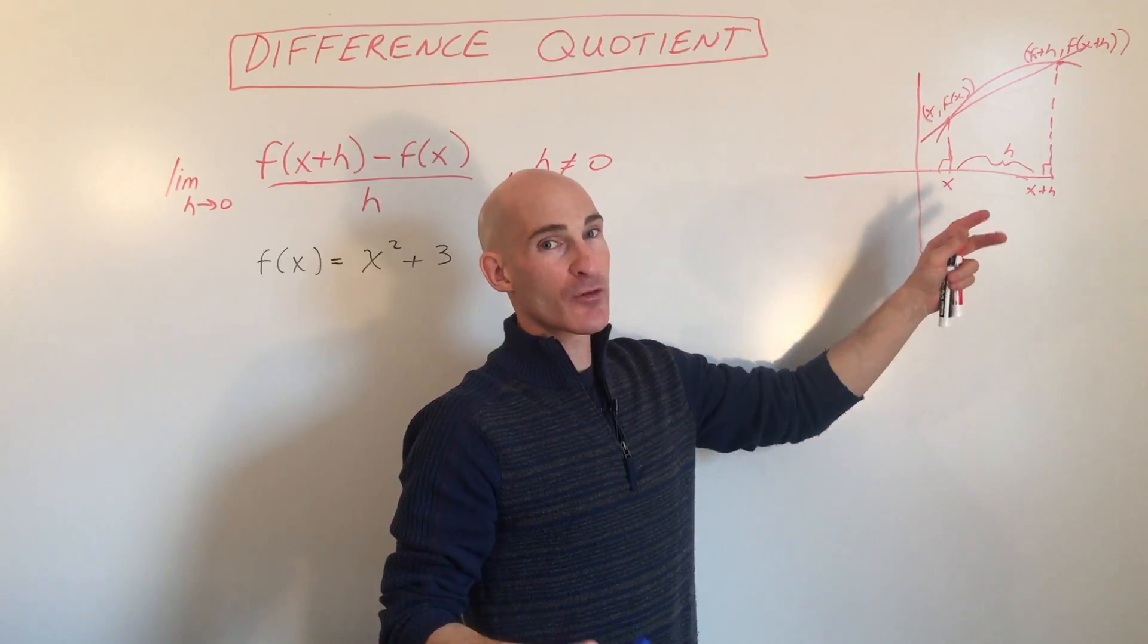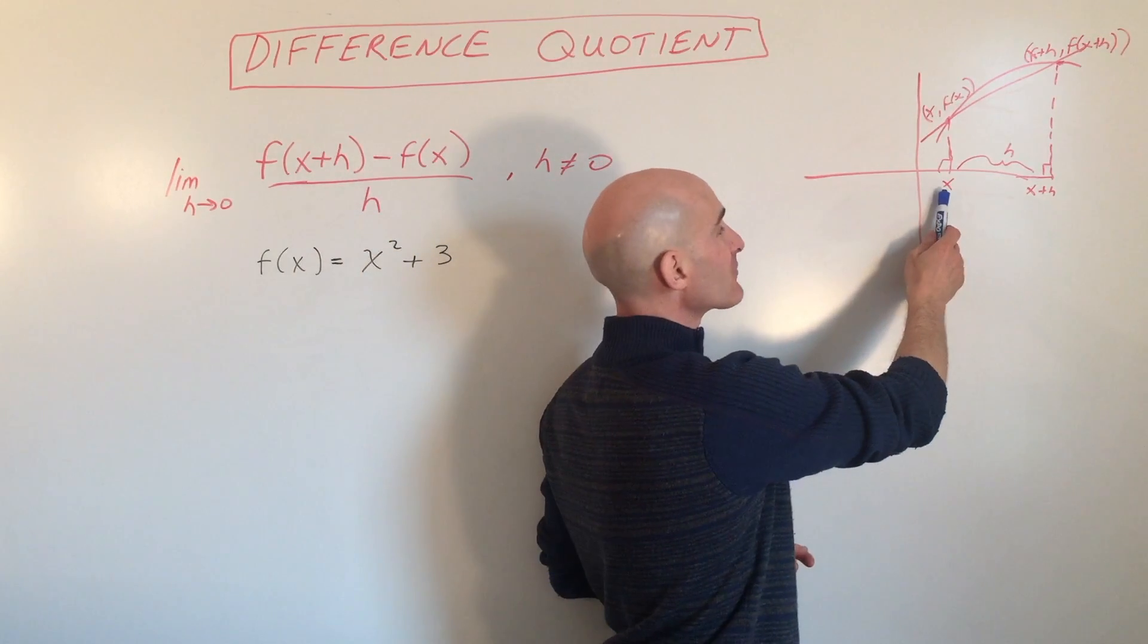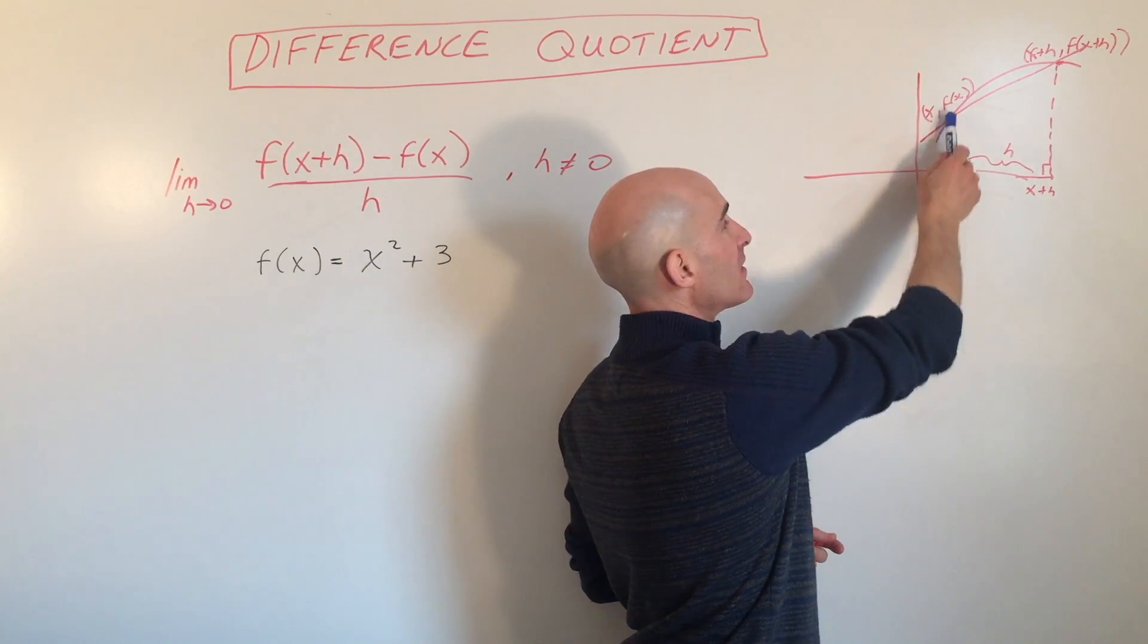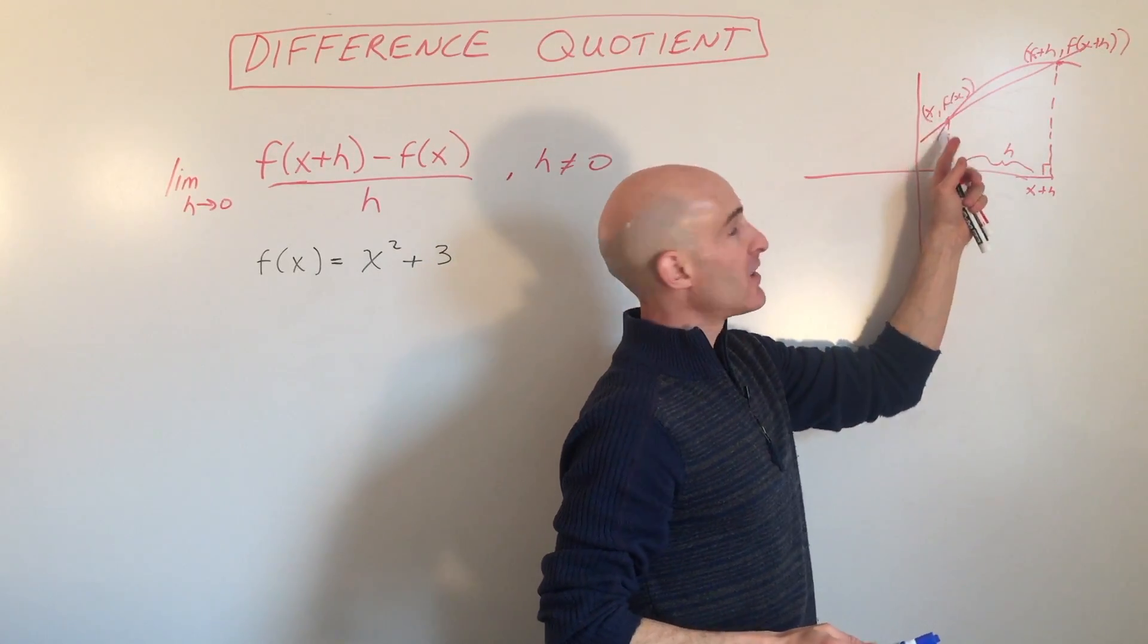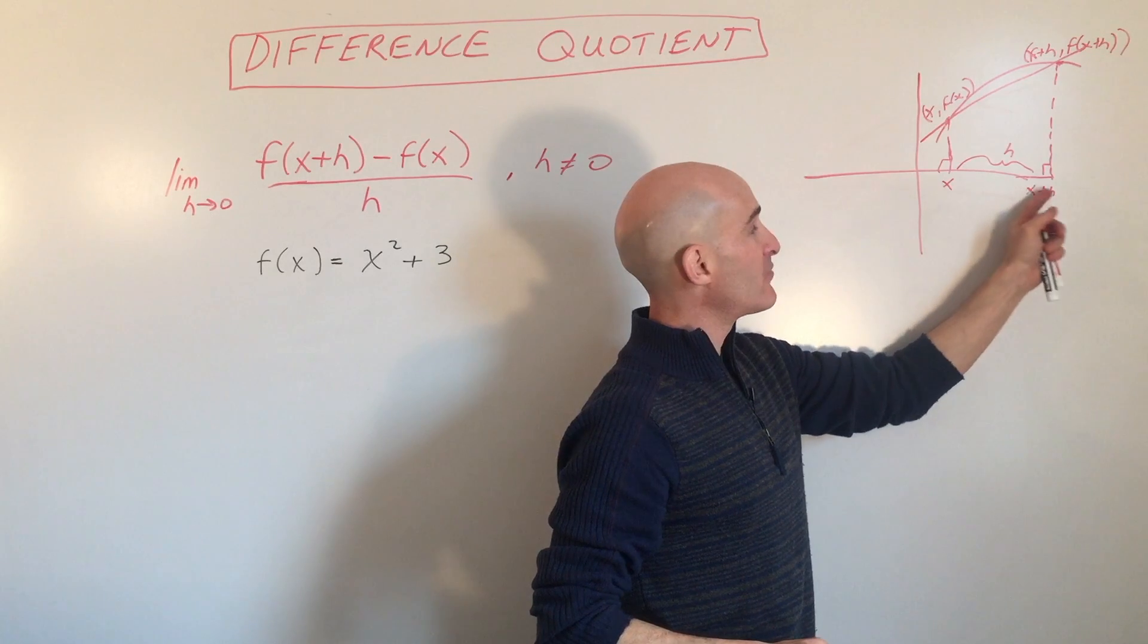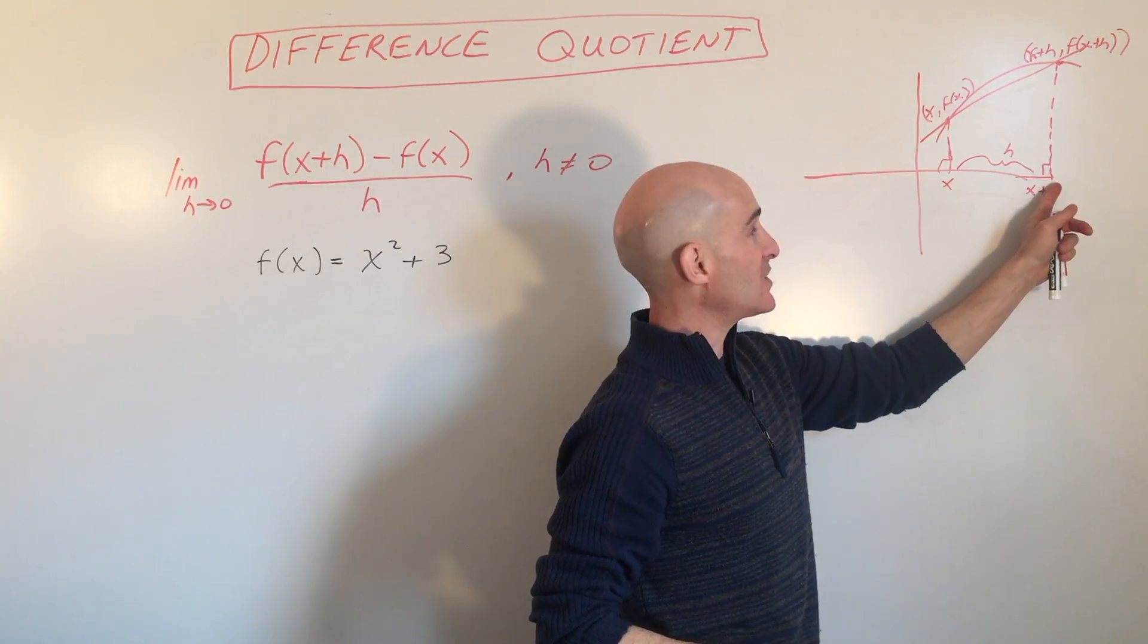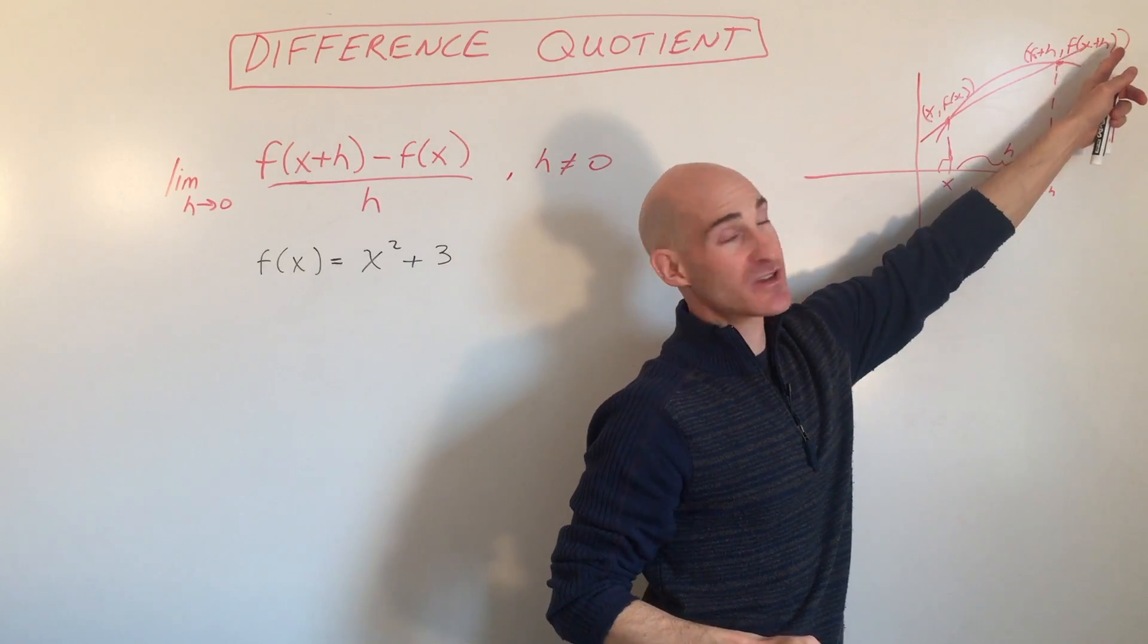This video is intended for pre-calculus students. What you have here is x, and the point f(x) on this curved region. If you go a little distance to the right, we call that distance h. That puts you at x plus h, and if you go up to the curve, that y-coordinate is f(x+h).